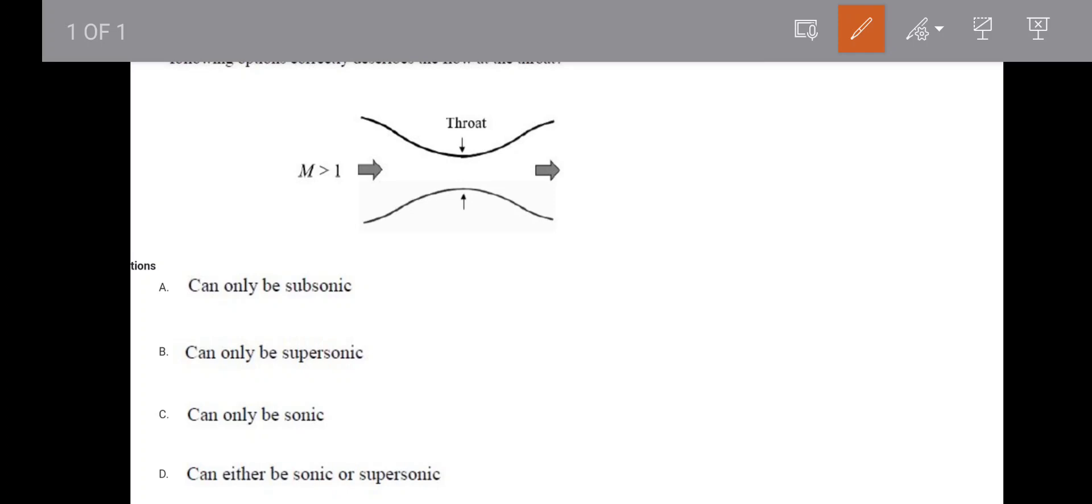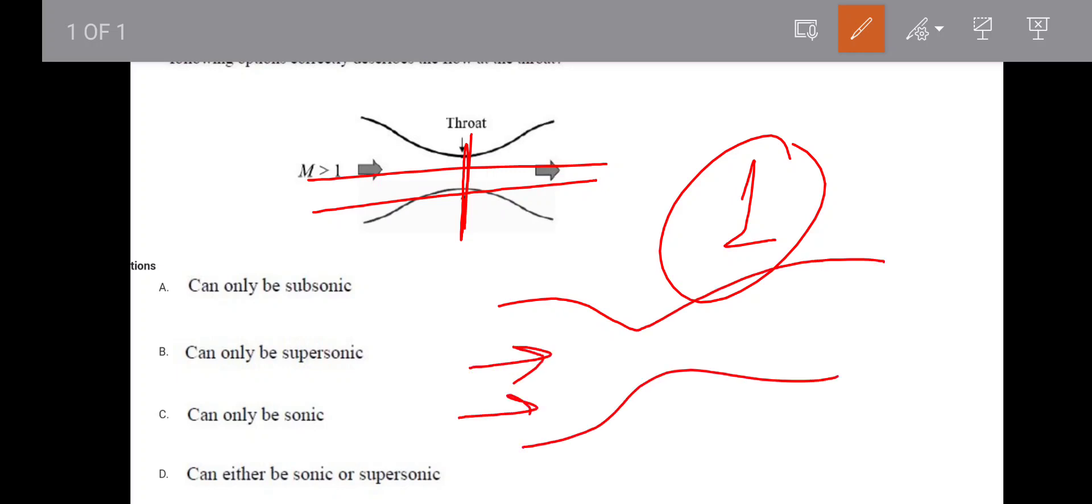Even in CD nozzle or CD diffuser, every time you don't achieve sonic, right? I hope you understand when do we achieve sonic. Sonic we achieve at first critical back pressure. In case of when I am teaching you that, suppose, when subsonic flow is going, this subsonic flow will accelerate and become 1. But when this will become 1? When the back pressure is first critical back pressure.